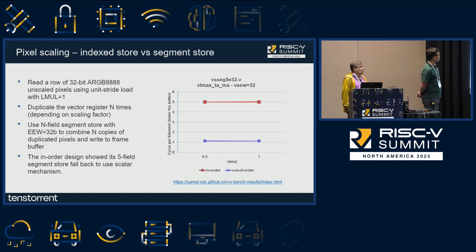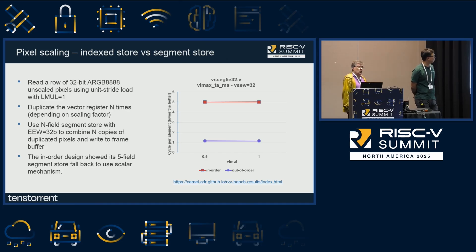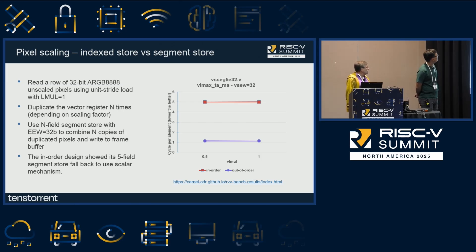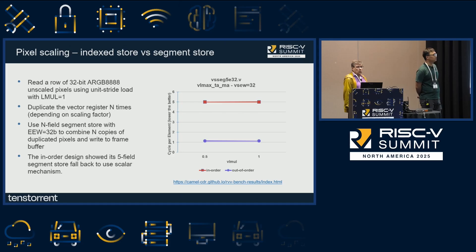Here is an example of using segment store because currently we don't have the zip instruction extension available. This has become a very interesting instruction to perform a zip-like function. The interesting finding is that the in-order design really just falls back to the scalar method, where it takes five cycles to perform one five-field segment store — it's really just doing one by one.